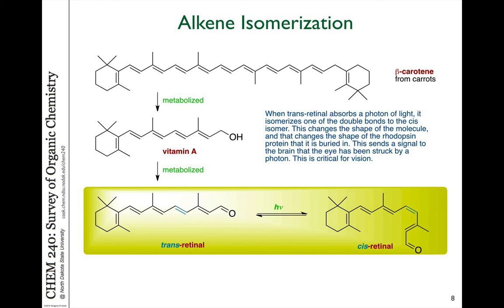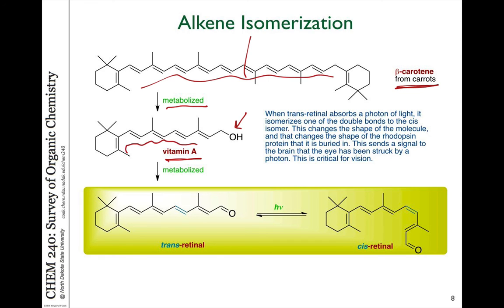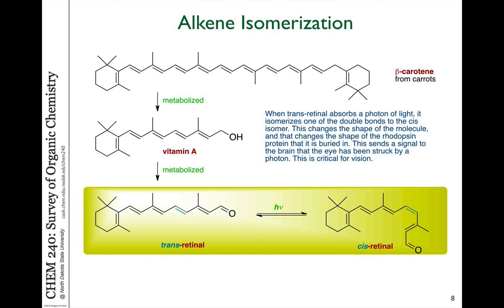The stereochemistry of alkenes affects the shape of the molecule and has impacts on biological mechanisms. For example, beta carotene is a molecule that comes from carrots. When it's metabolized by our body, it's basically cut in half and produces vitamin A, which has an alcohol group on the end. If you look down the longest chain of double bonds in beta carotene, where the groups along the chain are all on opposite sides — all trans to each other — you get a linear chain very similar in structure and shape to linear alkanes in their most stable, fully extended staggered conformation. This vitamin A is further metabolized into a molecule called trans-retinal.